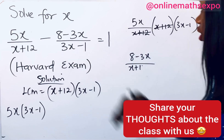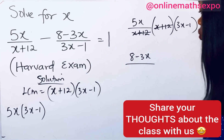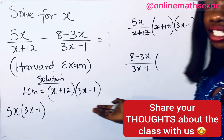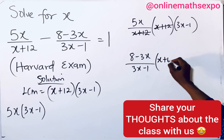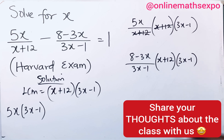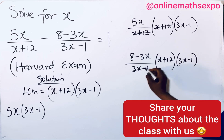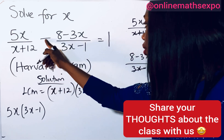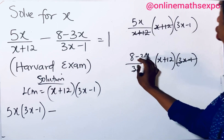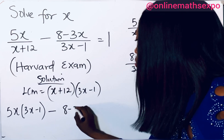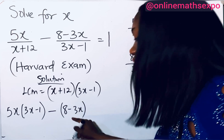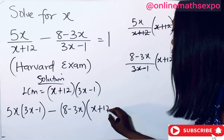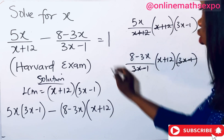The denominator (3x − 1) cancels with the matching factor in the LCM, leaving (8 − 3x) multiplied by (x + 12). Bring down the negative sign — since this is a subtraction — and put it in brackets. So the left side becomes 5(3x − 1) minus (8 − 3x)(x + 12).